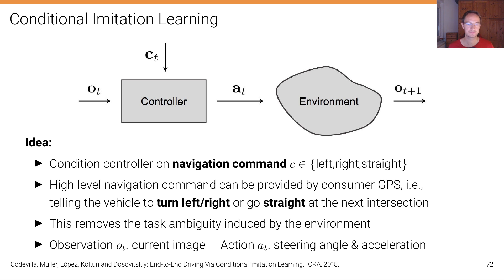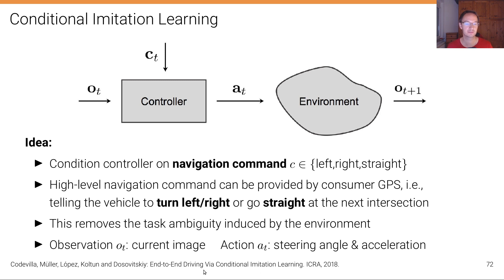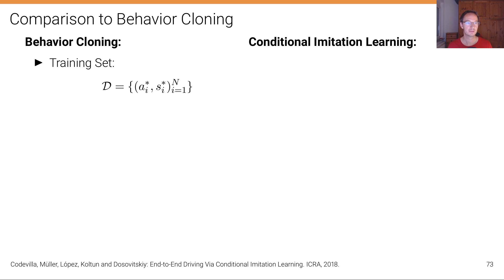In this setup, the observation o is the current image, and the action a is the steering angle and acceleration. This approach was first implemented in the work presented at ICRA 2018, called 'End-to-End Driving via Conditional Imitation Learning.' Let's compare naive behavior cloning and conditional imitation learning — which is also behavior cloning but with this conditioning.